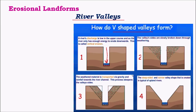Once this river bed undergoes further erosion, its depth increases. At a certain point, the walls of the river banks become weaker and, due to the loss of supporting material, they break and fall into the river, where they are further subjected to erosion. The swift-flowing river erodes all this fallen material, giving rise to a valley in the shape of a V. This successive breakage of river banks and vertical erosion gives rise to a V-shaped valley.